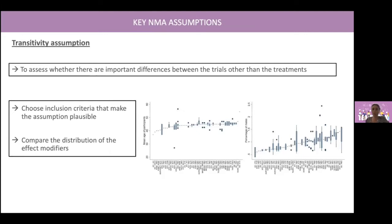Let's move to key network meta-analysis assumptions. One assumption that is absolutely necessary to ensure is the transitivity assumption. Transitivity assumption is the assumption under which it is valid to combine both direct and indirect evidence. To do so, it is necessary that direct evidence are similar in the distribution of the effect modifiers. Several methods exist; for example, the authors have to choose inclusion criteria that make this assumption plausible.